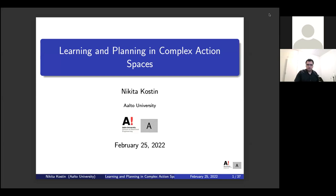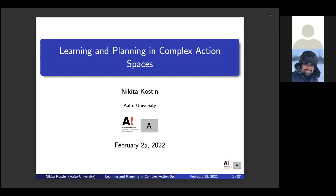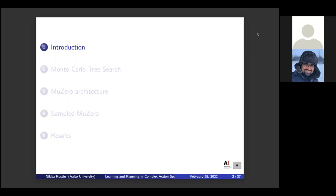Thank you very much for the introduction. Today I'm planning to present a paper which is an extension of the pretty recent MuZero paper for complex action spaces. The outline is: first I will introduce the general problem we're trying to solve, then talk a bit about Monte Carlo tree search, then the MuZero architecture, and finally the results.